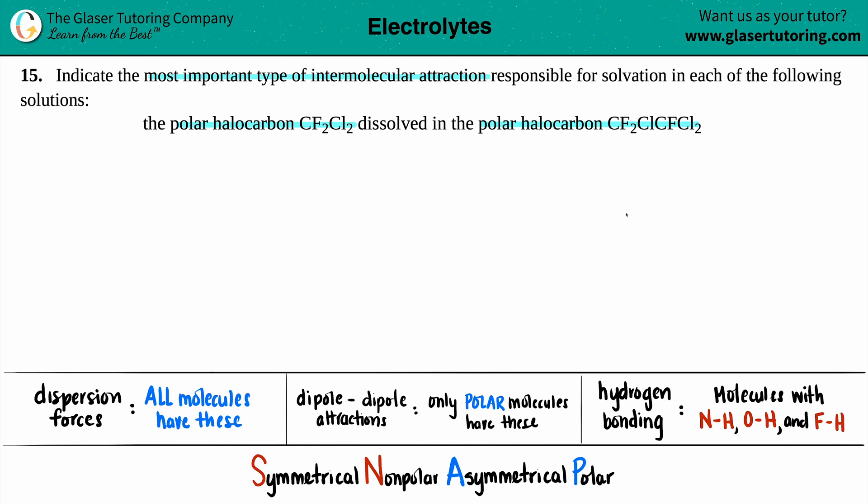Okay, so basically we want to know that when these two compounds, these two polar compounds get dissolved within each other, when the solvent solvates the solute, say that 15 times fast, right? What type of interactions is the most important one? And specifically, what type of intermolecular attraction is the most important one?